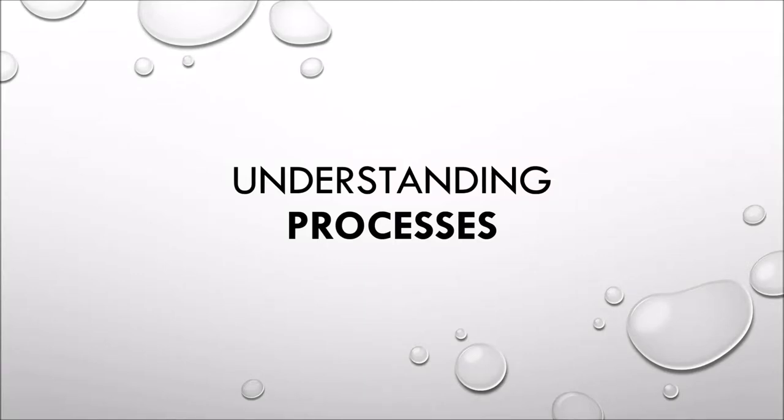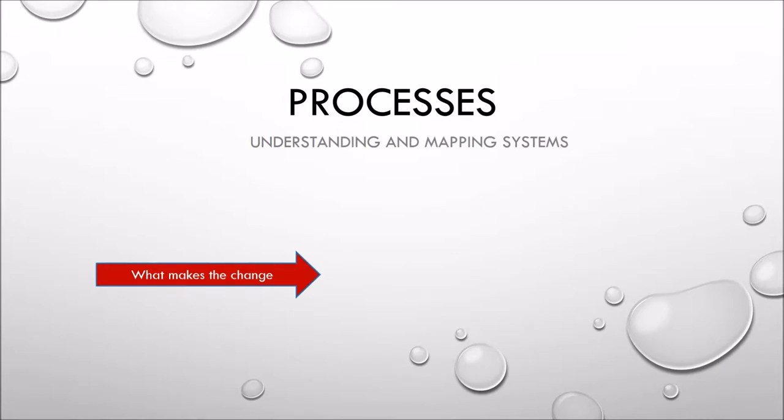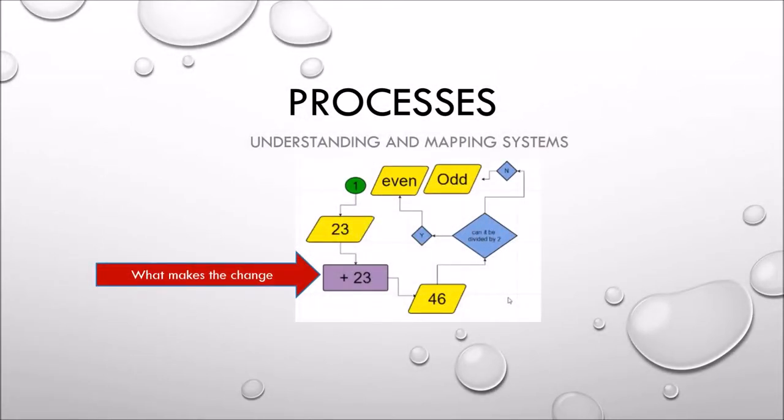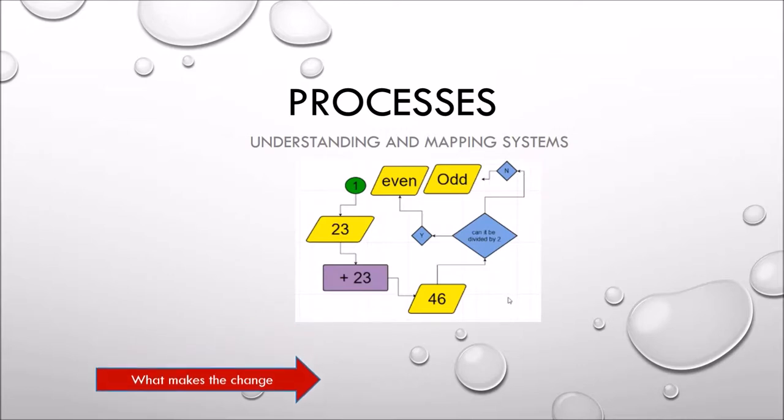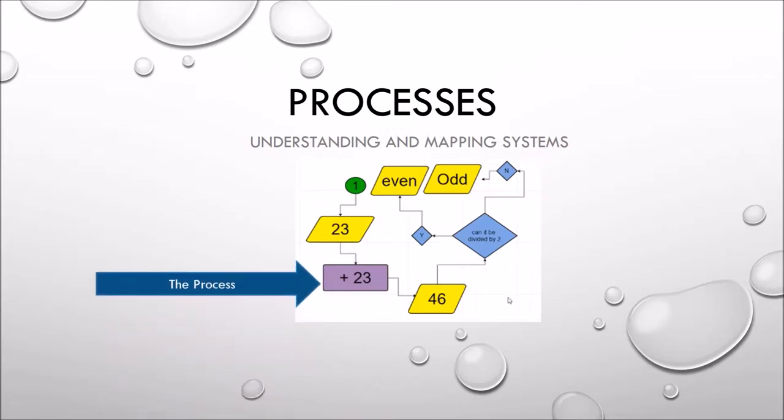A process is what makes things change. If you look at the example where 23 becomes 46, something had to happen and that's called the process. The process is whatever makes the 23 change to become 46, which is the addition of 23 plus 23—the operation of adding.